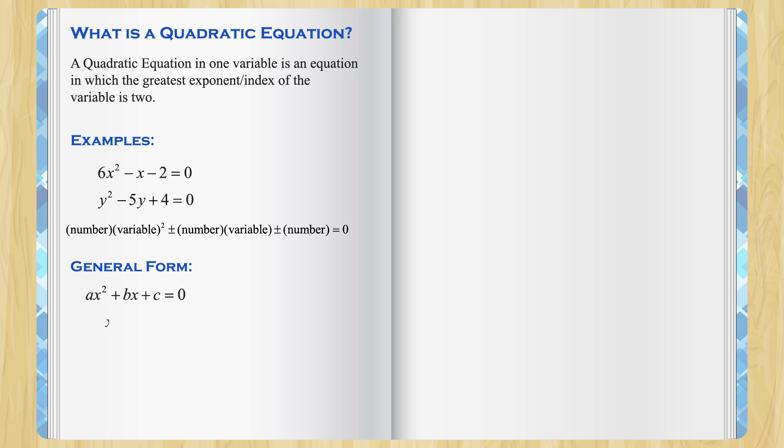So, x is a variable. a, b and c are numbers, more precisely real numbers. But there is an exception. a should not be equal to 0. We'll see why a cannot be equal to 0 in this very movie.